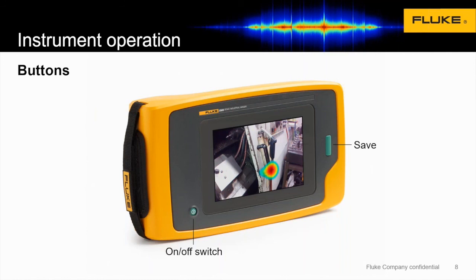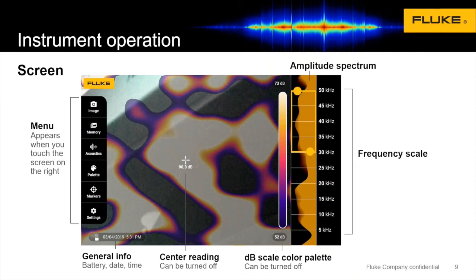Let's talk about the operation of the unit. There are two hard buttons: you've got the opportunity to save an image or a video, and then an on/off switch. The rest of the operation is through the touch screen. When you turn on the camera, you've got menu options on the left. If you select Image, that allows you to switch between images, videos, or what's called leak quantification. The Memory button takes you to a library of all the images stored on the device. The Acoustics menu allows you to make adjustments to the decibel levels you're picking up and fine-tune the unit for your specific applications.